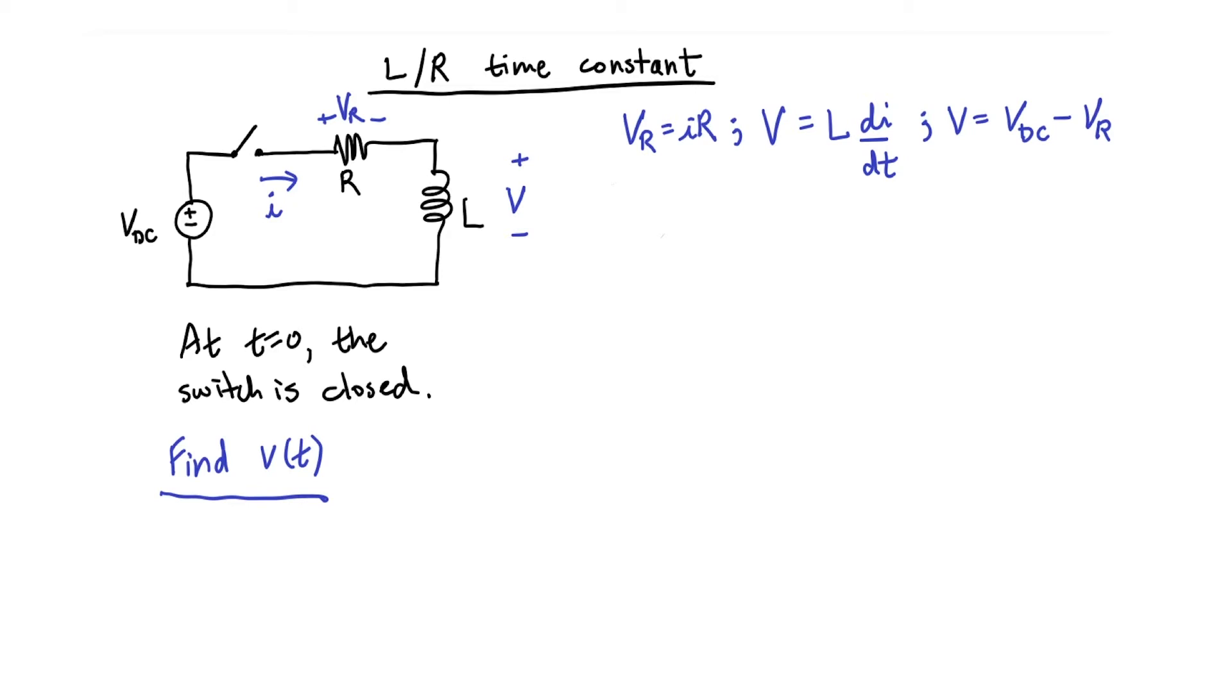So continuing here from the third, I can rewrite it as V equals Vdc minus I R, substituting in from the first equation. Now I have two equations remaining and two unknowns, V and I, with respect to time. If I substitute the second equation, then I have L di over dt equals, and then I can write the rest of it. So finally I have an equation where the only variable with respect to time is I.